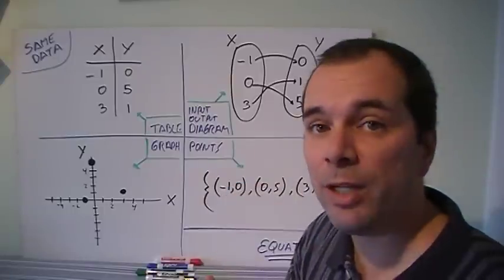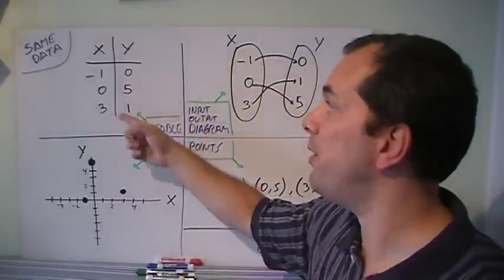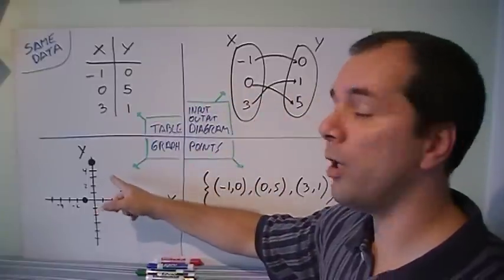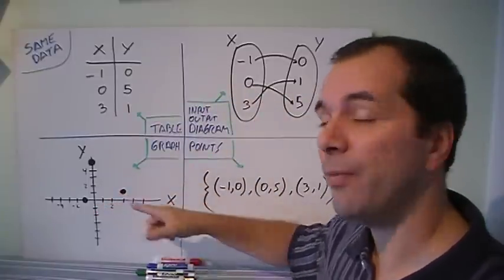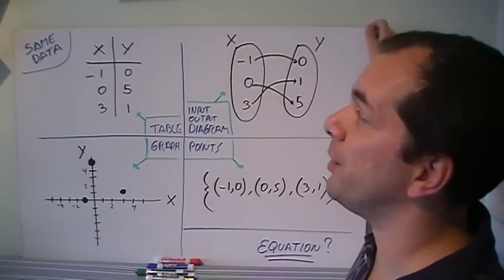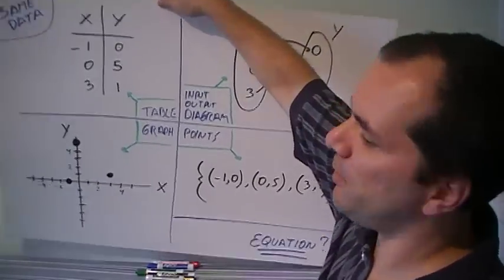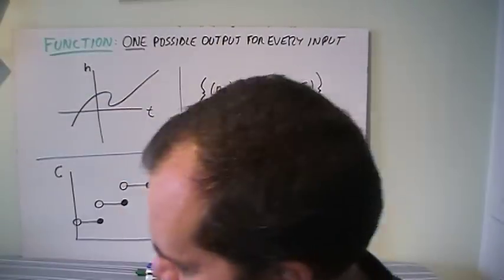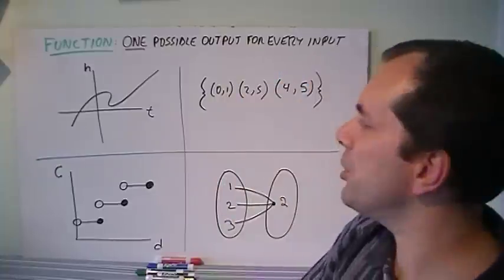But I know that I can give you an equation and then you can turn it into a table of values or a mapping diagram or a graph. And going from an equation to a graph would be helpful for us to use the vertical line test. So let's look at some examples and see if we can tell if they are functions or not.